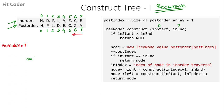The first function call is construct(0, 7). We check if start is greater than end — this is false. Then we create a new tree node at the 7th index of the postorder array, which is A, so the node points to A. We decrement postIndex so it becomes 6. We check if start equals end — then we search A in the inorder traversal. The index of A in the inorder traversal is 4, so inIndex becomes 4.